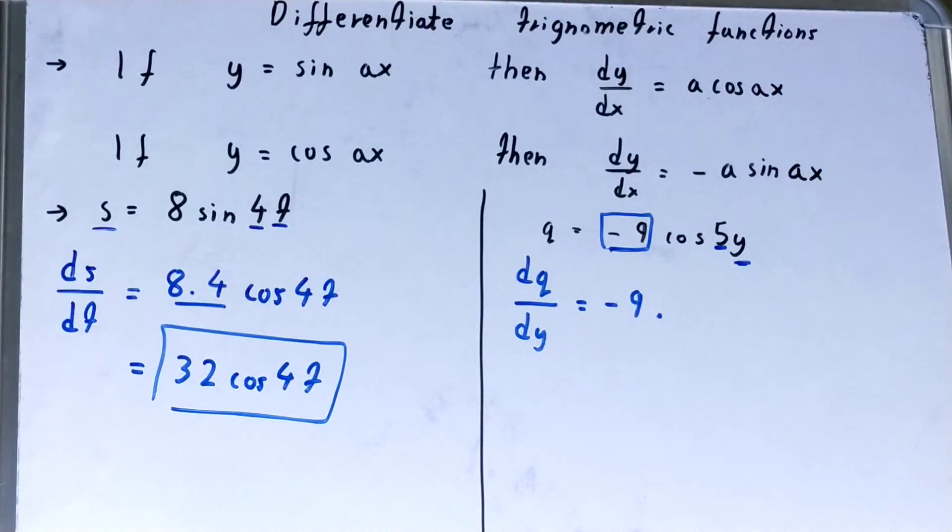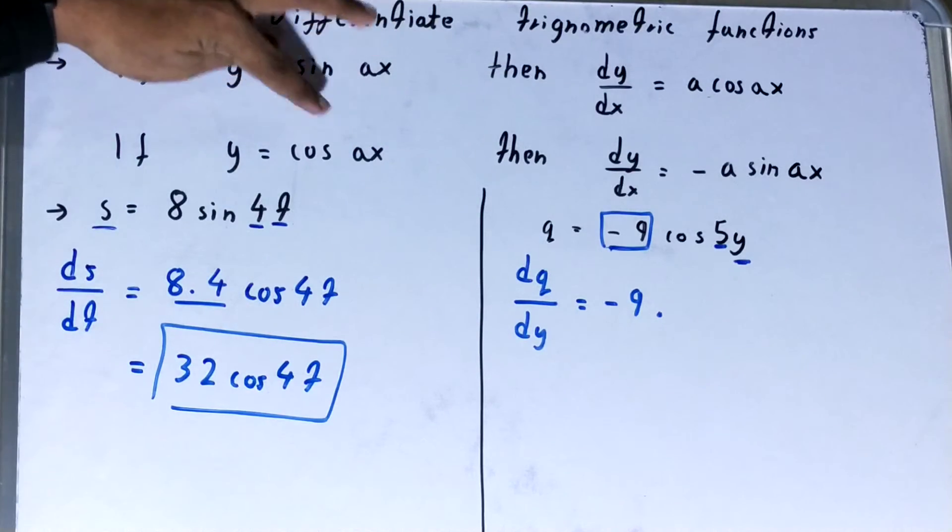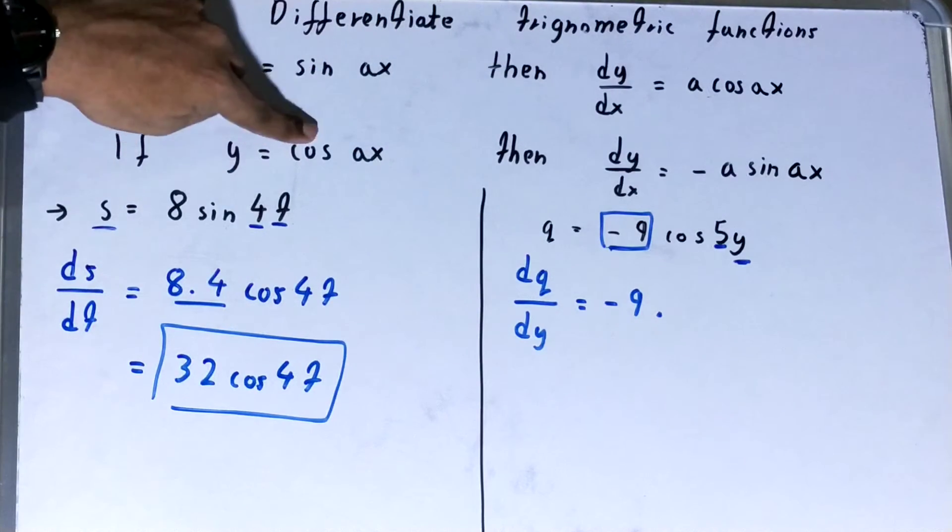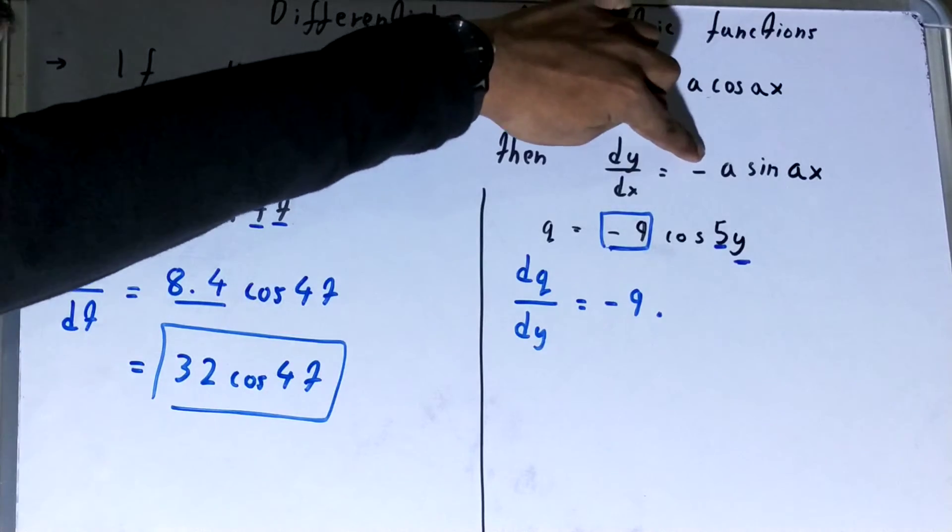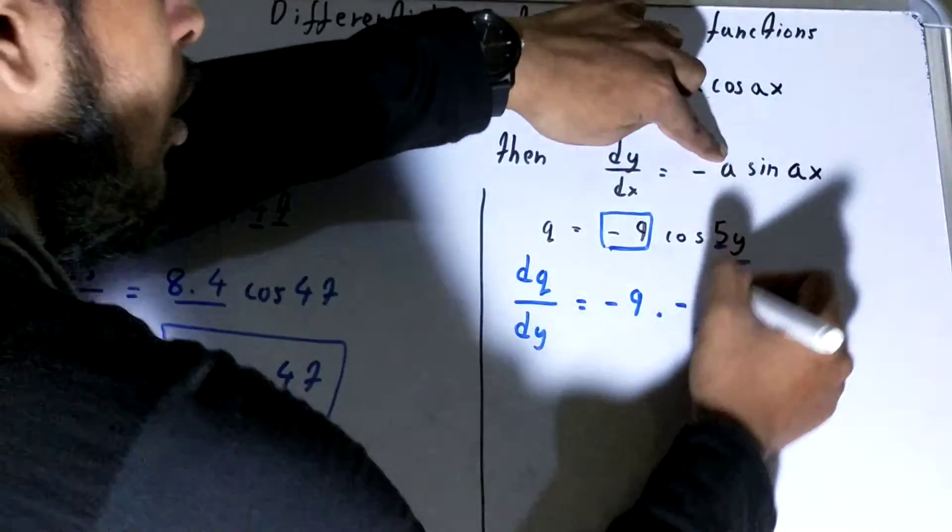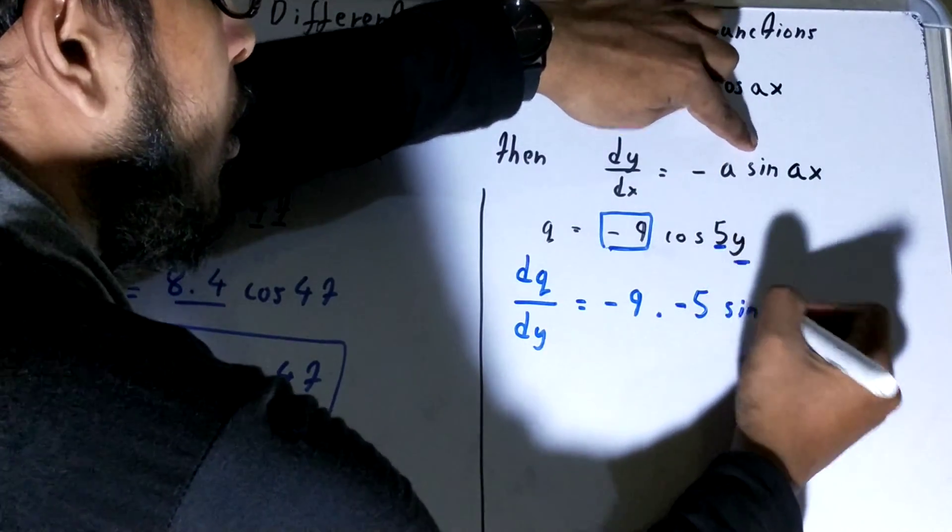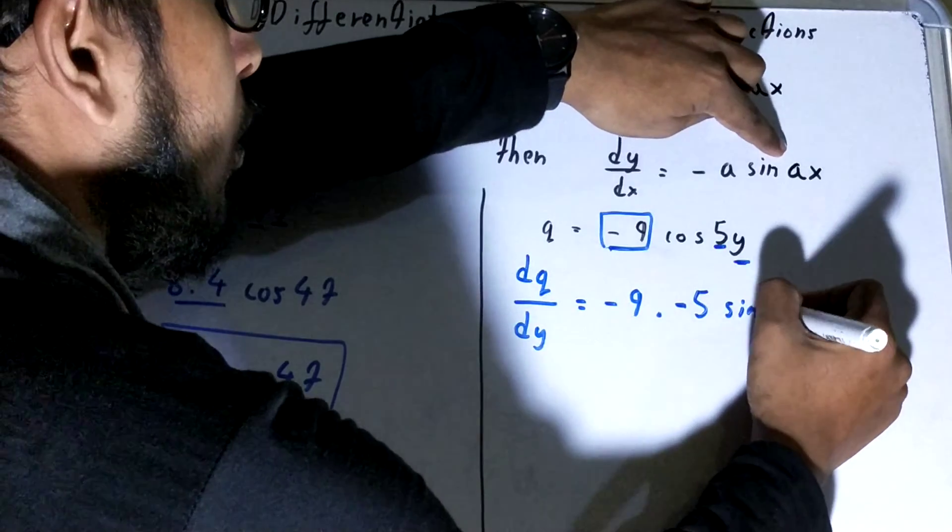See over here, what is your a and what is your x? So a is basically 5 and x is basically y. So this formula we'll be using. If you have differentiation of cos ax, you'll write it as minus. So you'll write minus sine a. What is your a? A is 5. Sine, a is 5, x is y.